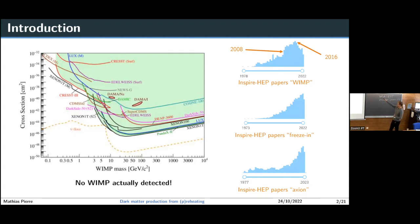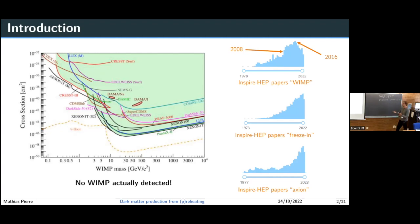Since a couple of years there's also a rise of interest in alternative dark matter production mechanisms. We've seen a rise of interest in alternative dark matter candidates such as axions, but also production mechanisms invoking inflaton dynamics occurring in the earliest stages of the universe.